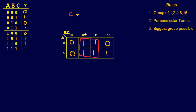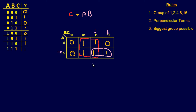So that group gives us C. Now we have another group — a group of 2. You are allowed to overlap, so I'm utilizing part of that four-block into this two-group. In this group, A is a consistent variable since A-not wasn't used. Looking at these two cells, B equals 1 in both, so B is consistent. However C has both C and C-not, so C cancels out. This gives us AB. So the final equation is AB plus C.